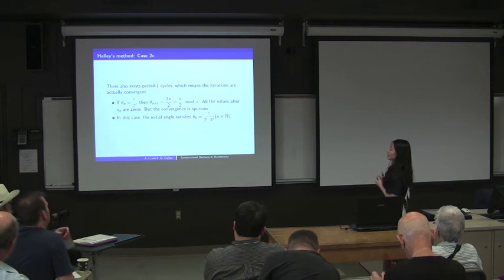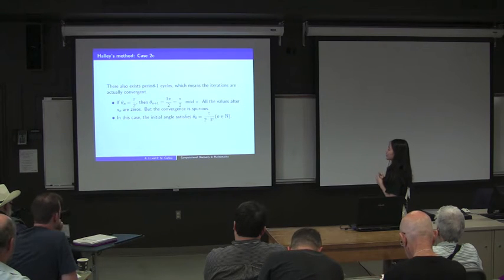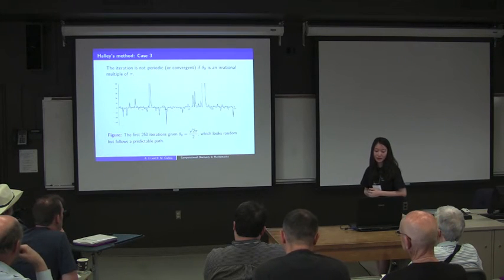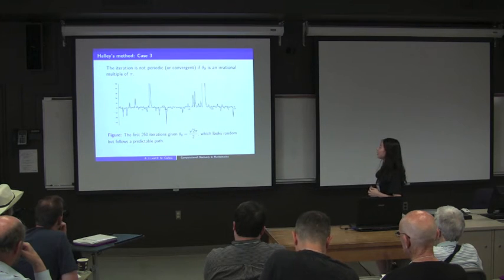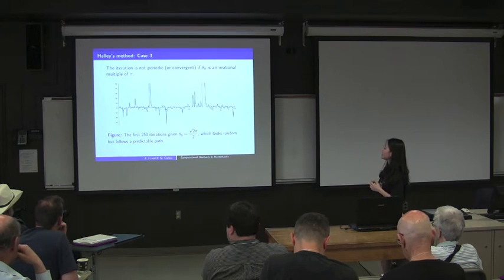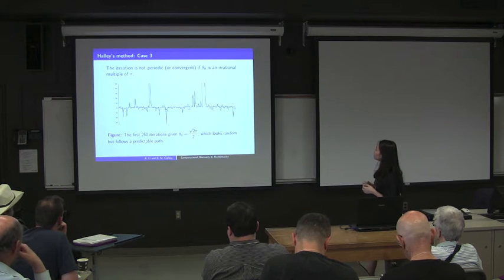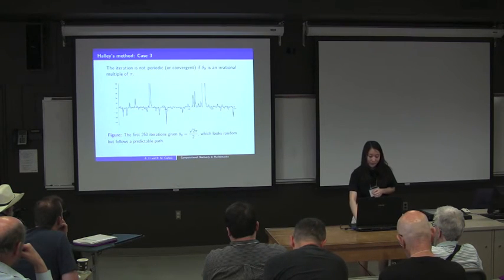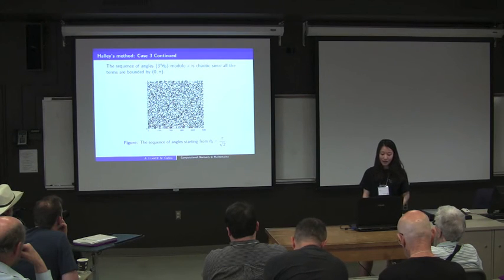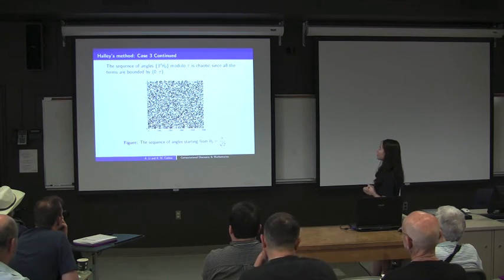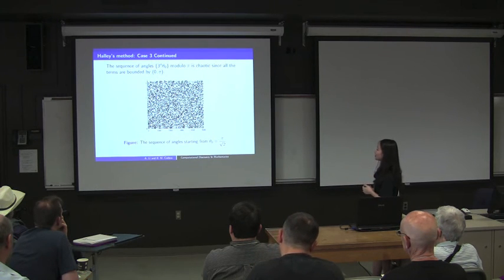In this case the initial angle satisfying this condition is θ₀ equals π over (2 times 3ᵐ). The last case is when the iteration is neither periodic nor convergent, occurring when the initial angle is an irrational multiple of π. Here is a figure for one iteration with initial angle π over √2. The two peaks are truncated to show more detail around the axis. We are more interested in the sequence of angles modulo π. Since it is non-periodic and bounded in the interval (0, π), this is chaotic behavior.